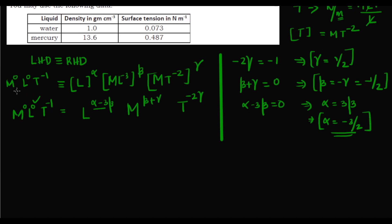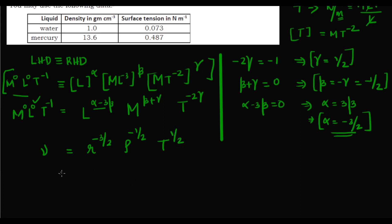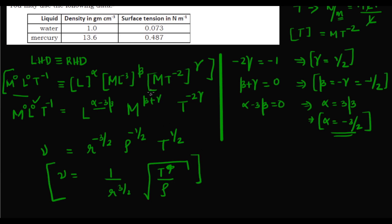Substituting back, the frequency formula becomes: ν ∝ R^(−3/2) · ρ^(−1/2) · T^(1/2), which simplifies to ν ∝ (1/R^(3/2)) · √(T/ρ). That is the derived formula for the oscillation frequency of the liquid drop.